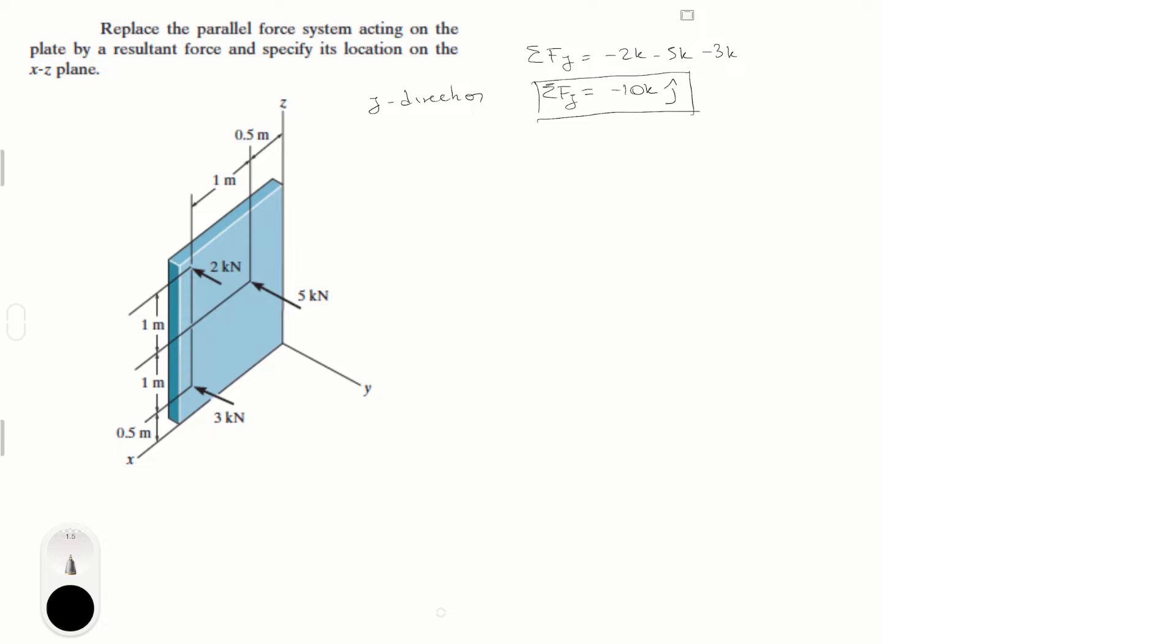Now, we have to find the point at which this resultant force would apply in the x and y plane. And for this, we basically have to do two calculations, which is the sum of the moments around x. Now, the sum of the moment around x, remember that it's going to be the resultant force, let's call it FR,